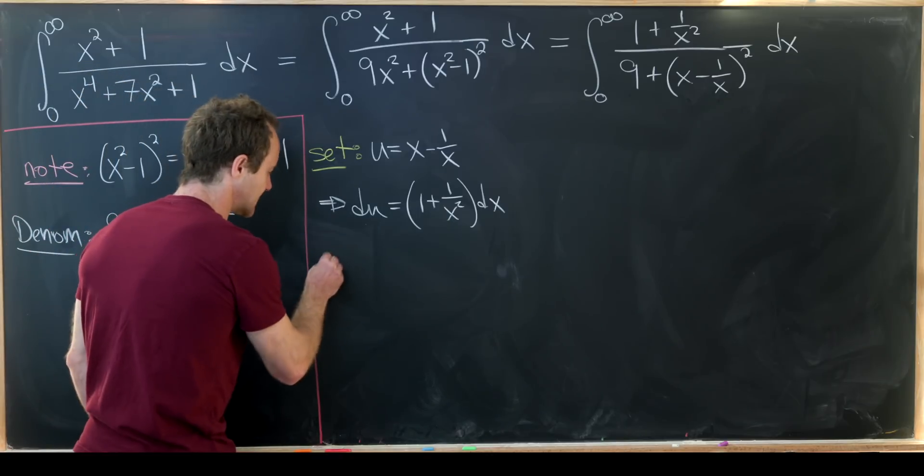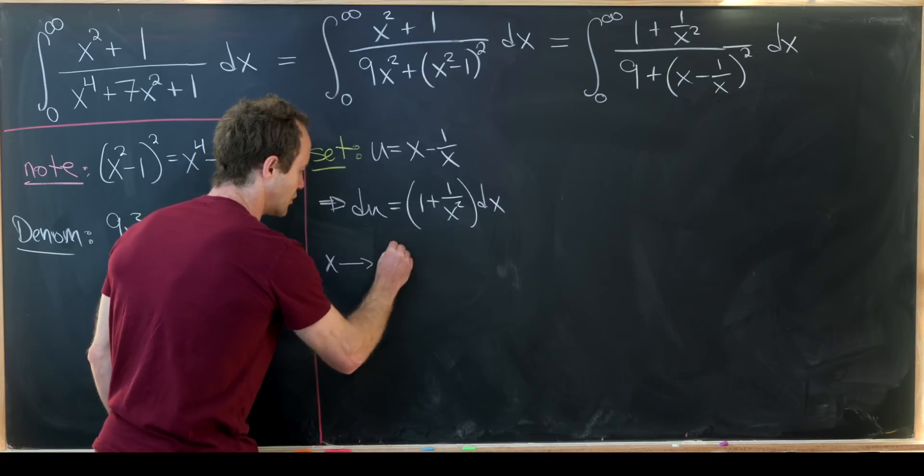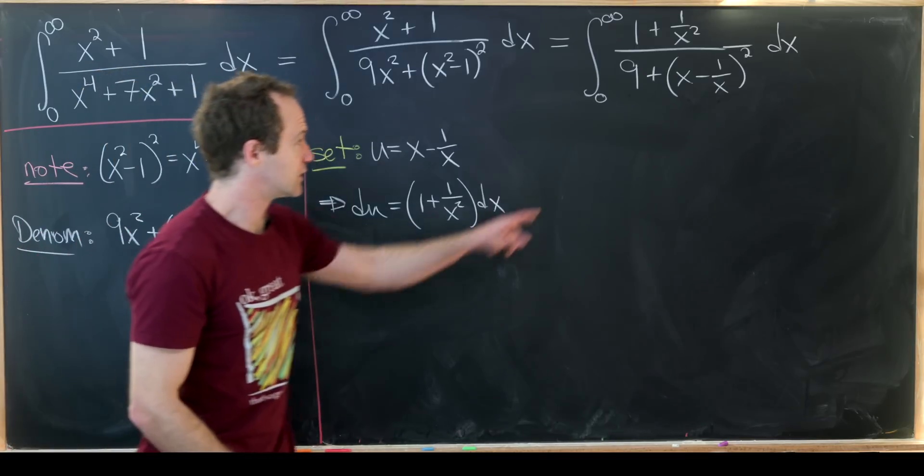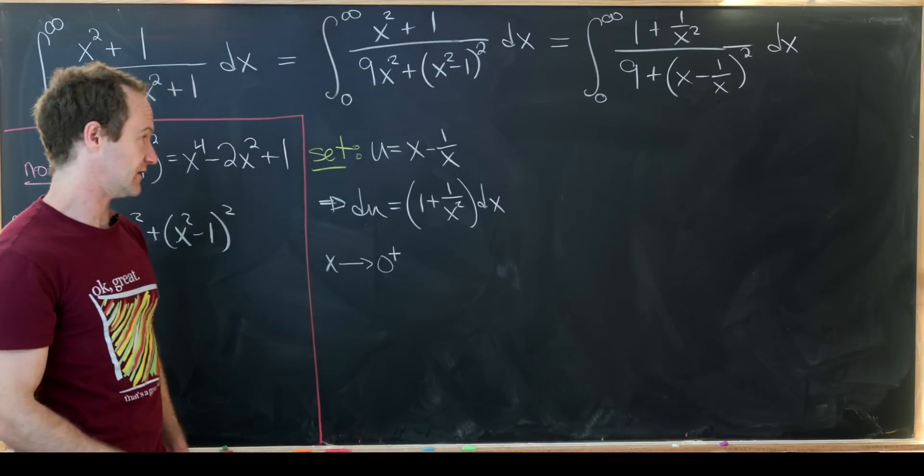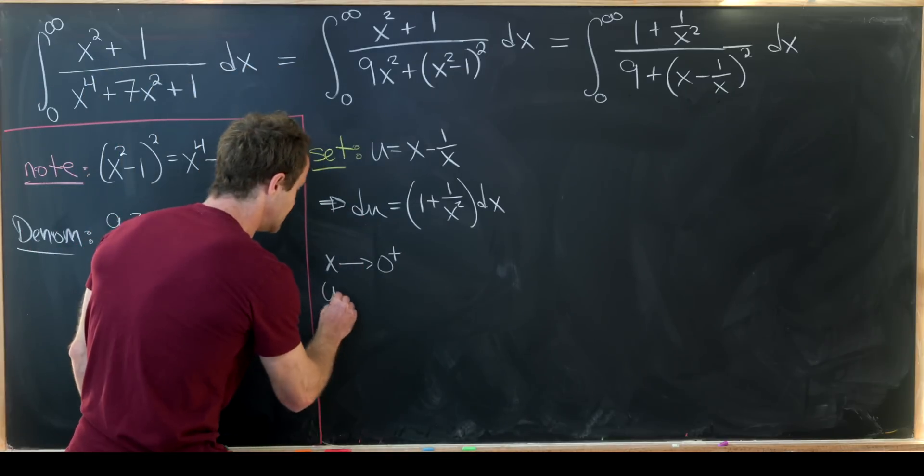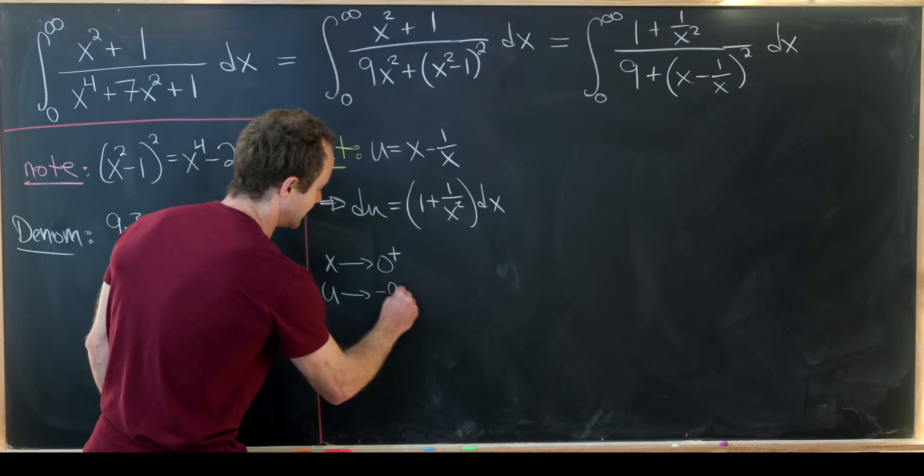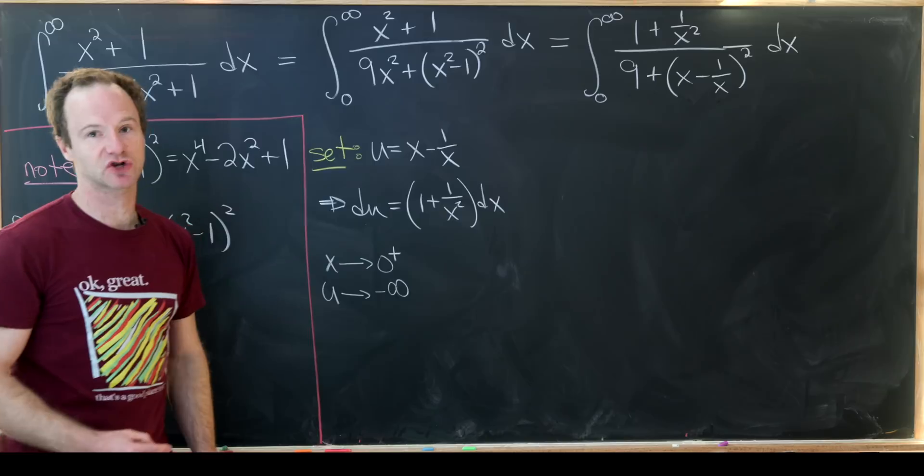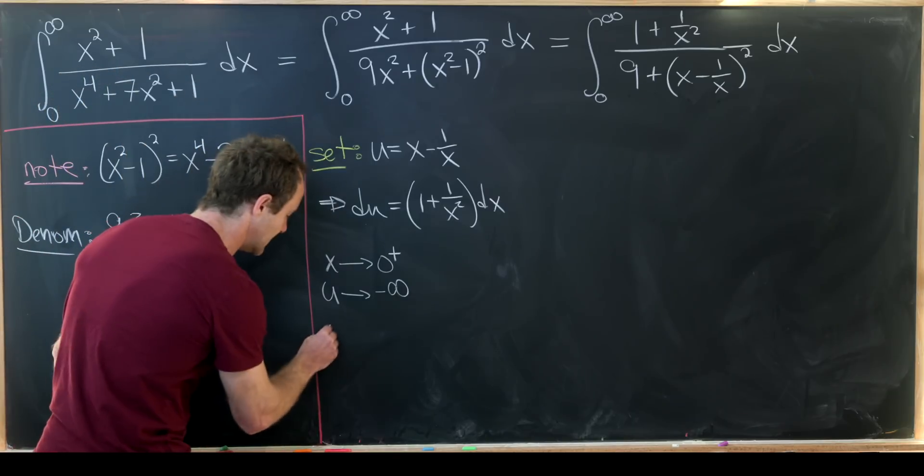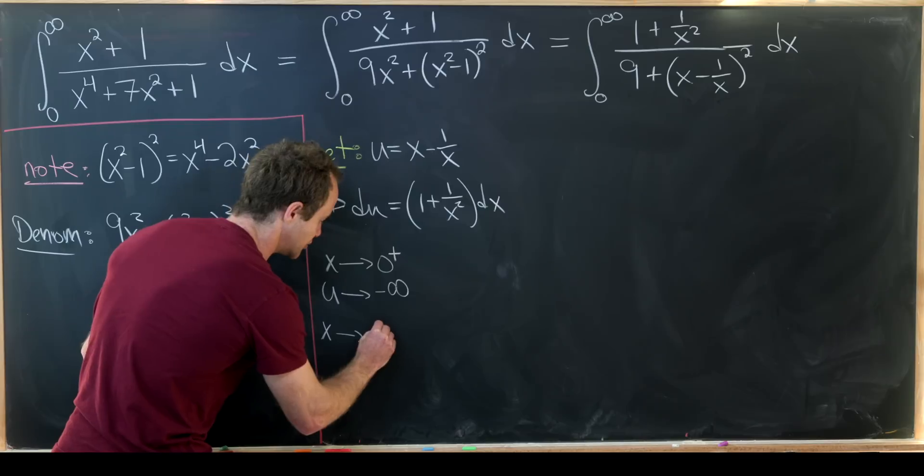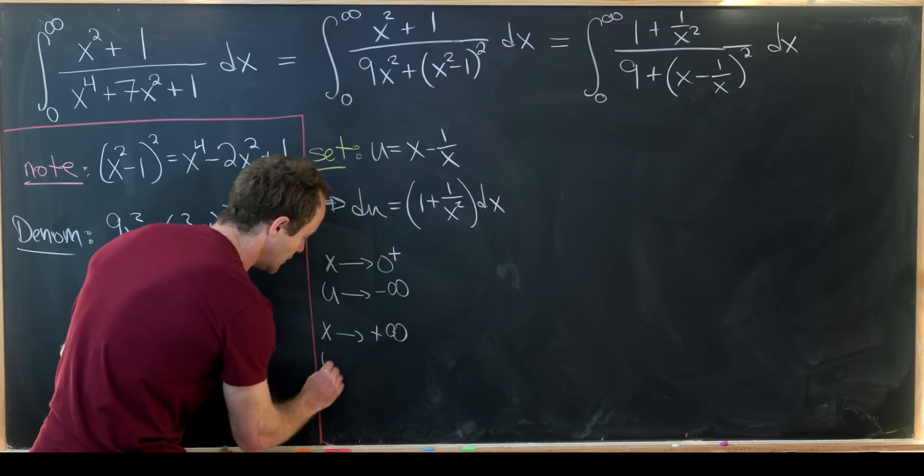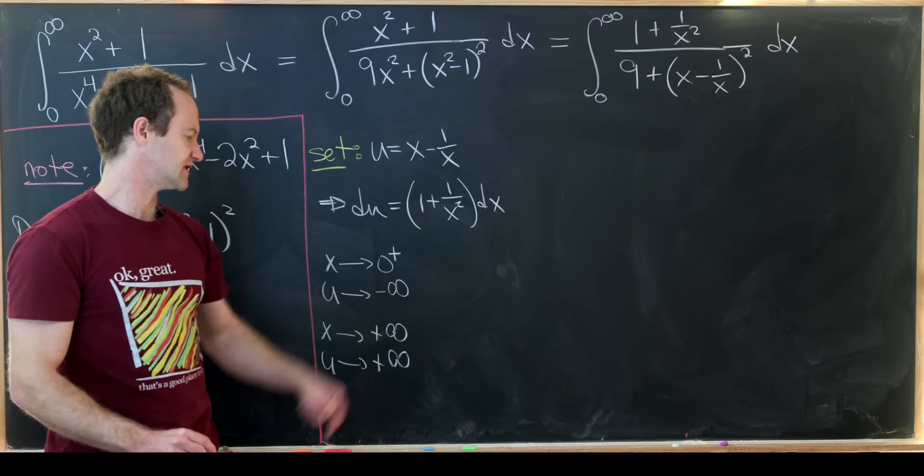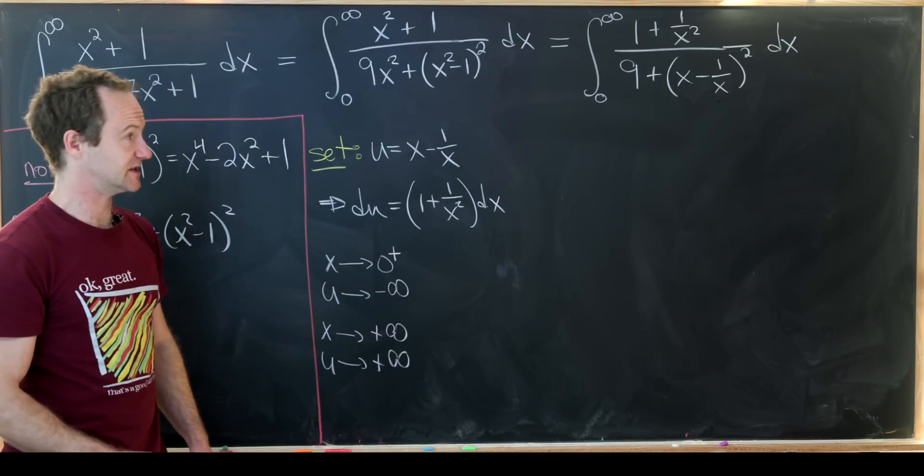Next, let's notice: if x approaches 0 from above, which is what's happening in the lower bound of integration, we have u approaching negative infinity. That's pretty clear from the structure of u. And if x approaches positive infinity, we see that u is also approaching positive infinity, because this 1 over x term is approaching 0.